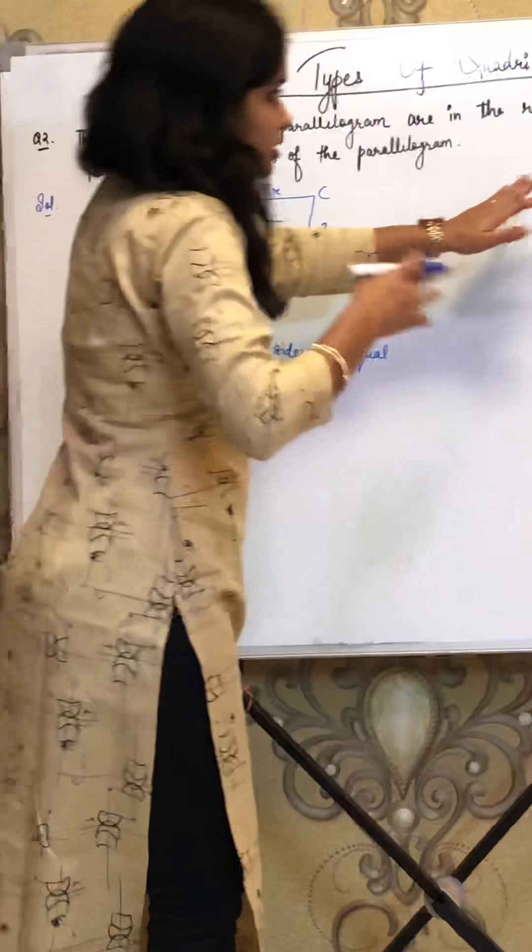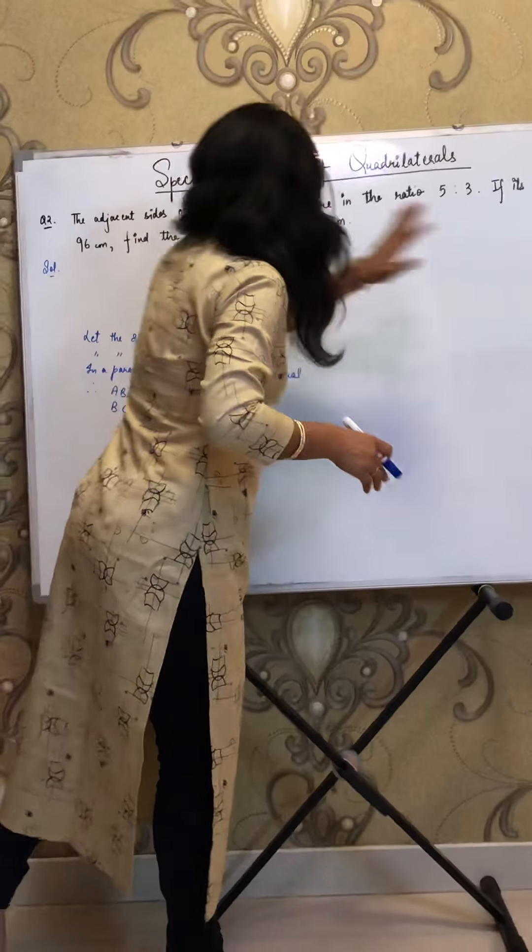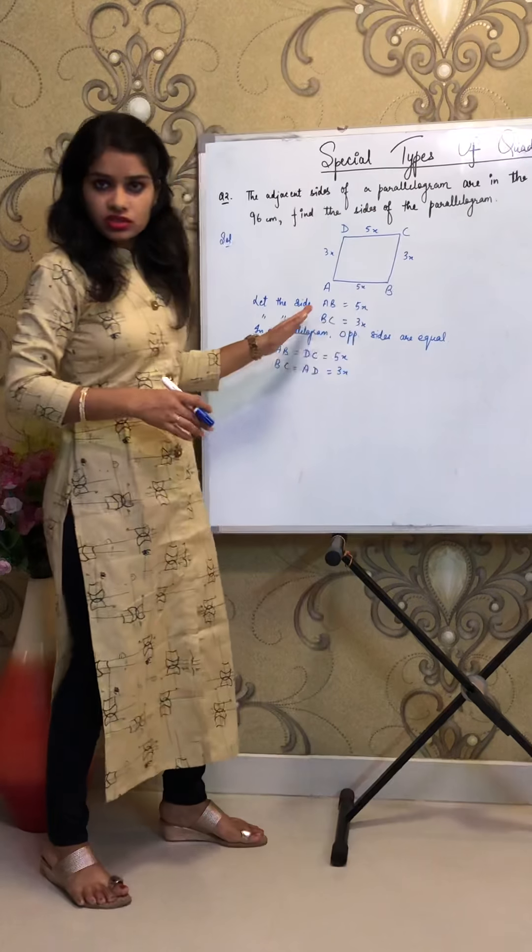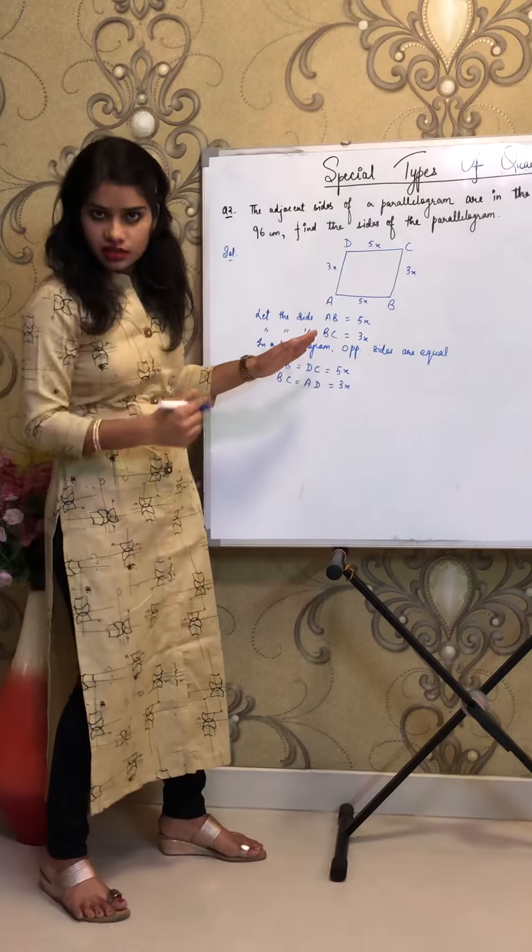Now read another sentence of the question: if its perimeter is 96. Perimeter means what? Sum of all the sides, or you can say boundary, correct?